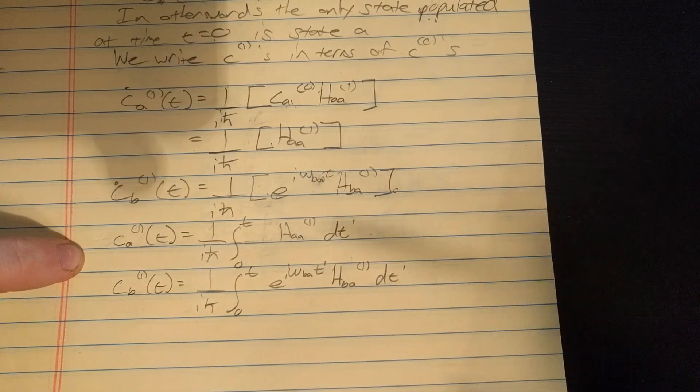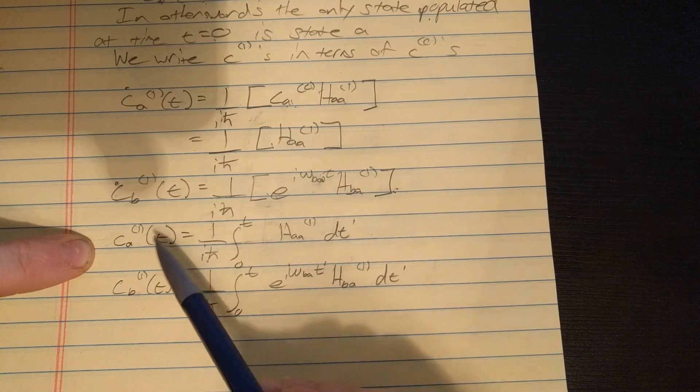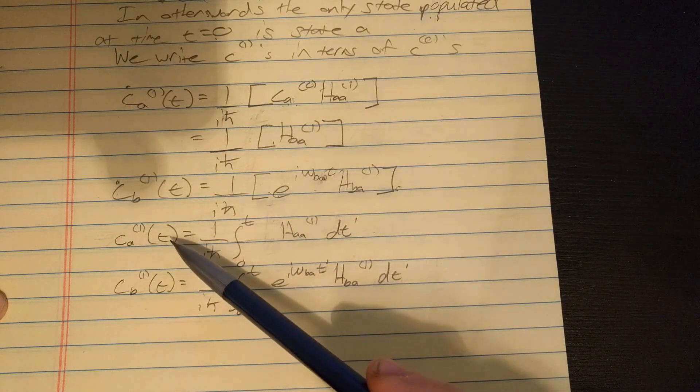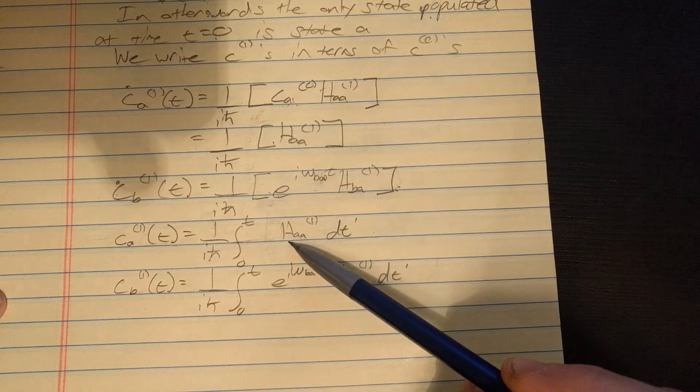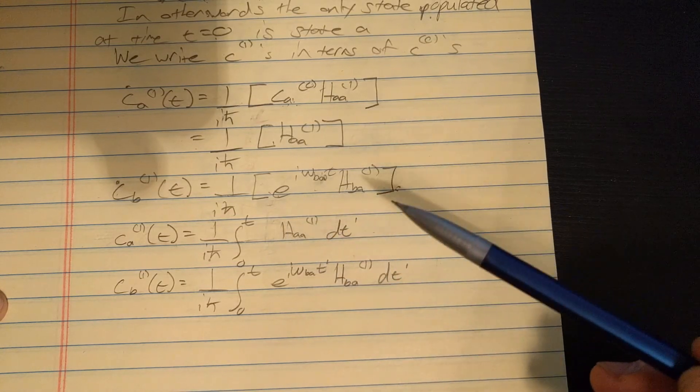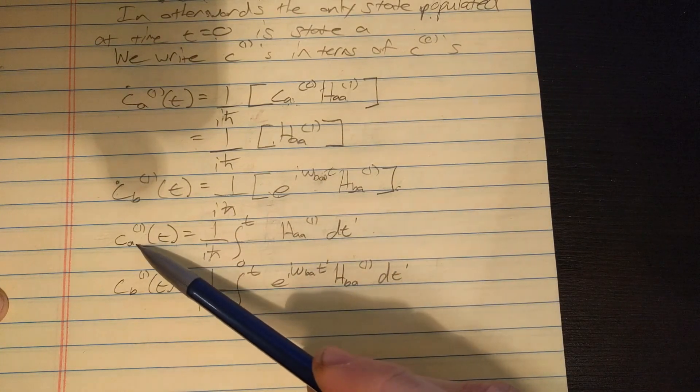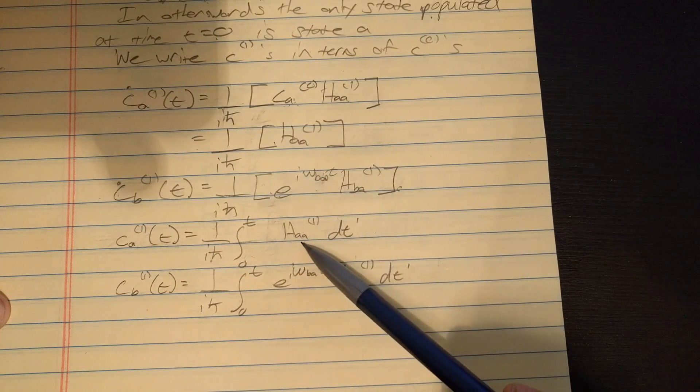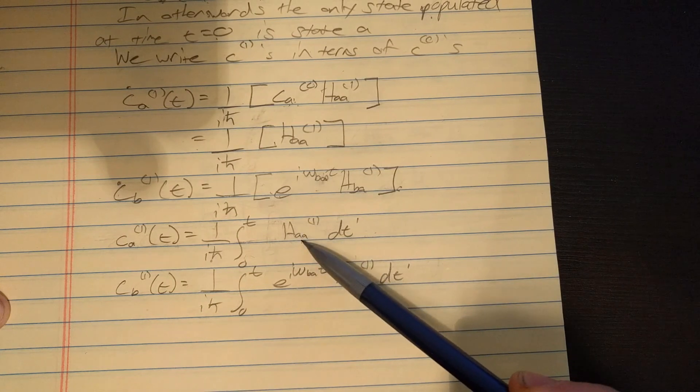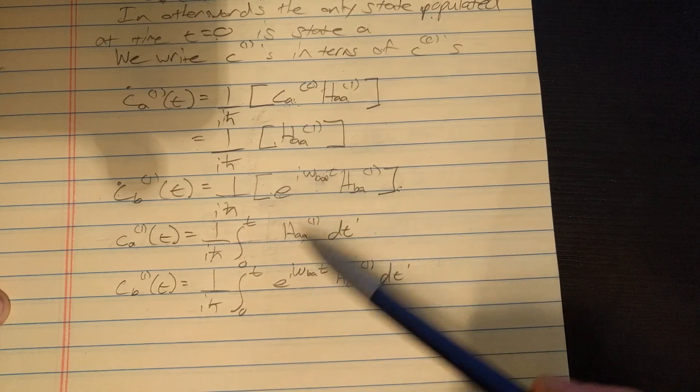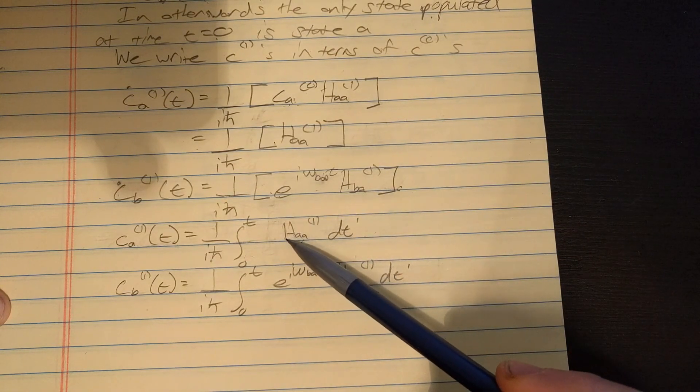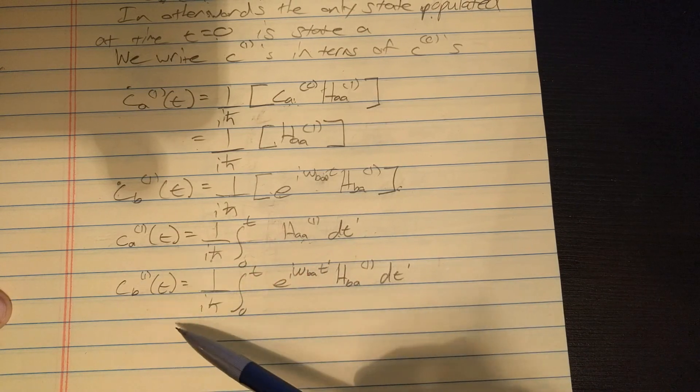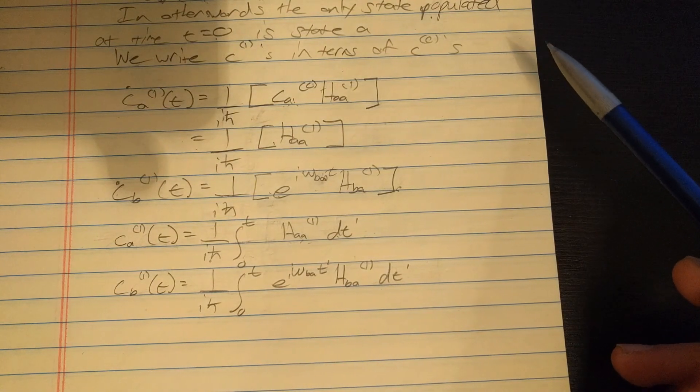And finally we get to the result that we have our coefficients as a function of time. So now we have our coefficients as a function of time, and once we know our perturbation H, which is gonna depend on time, then we can find the probability that we're in state a or state b. I mean we can find the probability now, but we can't perform this integral because we don't know our perturbation. So in a later video I'm gonna do a sinusoidal or oscillatory perturbation, like an electric wave, and we're gonna plug in for this H and be able to solve the integral and actually get the probability of being in state a or state b. But that's all for now, so I hope you enjoyed that, and thanks for watching, have a good day.